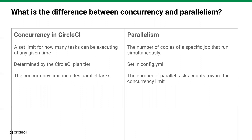Concurrency in CircleCI is a set limit for how many tasks can be executing at any given time. We'll talk in a minute about what exactly counts as a task. Concurrency is determined by your CircleCI plan, and the concurrency limit includes parallel tasks. Parallelism is the number of copies of a specific job that runs simultaneously. It's set in your configuration file, and the number of parallel tasks count toward your concurrency limit.